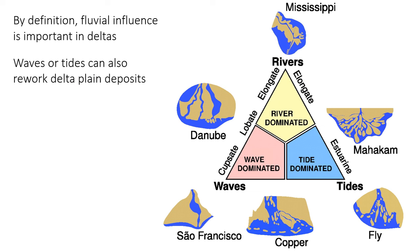Fluvial processes are obviously important in deltas since the delta is where the river empties into the ocean, but the shallow parts of a delta can also be heavily reworked by wave energy or tidal energy. The primary way to identify delta deposits is to look for that mixture of fluvial sedimentary indicators such as ripples or dunes, along with wave or tidal sedimentary indicators such as wave ripples, hummocky or swaly cross-stratification, flaser bedding, inclined heterolithic stratification, etc.